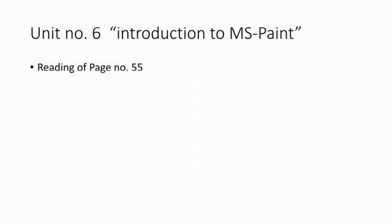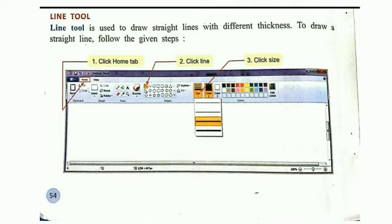In the previous lecture I told you about the line tool. The line tool is used to draw straight lines with different thickness. Line tool ko aap different lines draw karne ke liye use kar sakte hai. To draw a straight line, follow the given steps. Aap haemne straight line draw karne hai toh koon koon se steps hai.